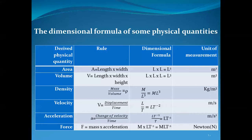Third: density. Density is a derived quantity equal to mass over volume. Mass is a fundamental quantity with symbol M. Volume has dimension L³. So density equals M over L³, which in dimensional formula form is M·L to the power negative three. The unit of density is kilogram per meter cubed.